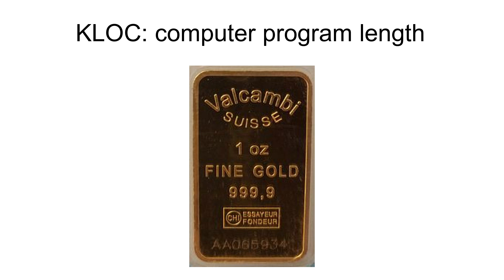An alternative measurement was defined by Pegasus Mail author David Harris. The WAP is equivalent to 71,500 lines of program code because that number of lines is the length of one edition of Leo Tolstoy's War and Peace. The tick is the amount of time between timer interrupts generated by the timer circuit of a CPU; the amount of time is processor dependent.